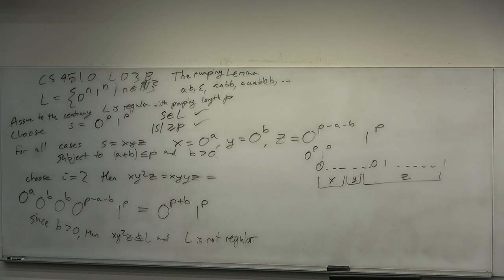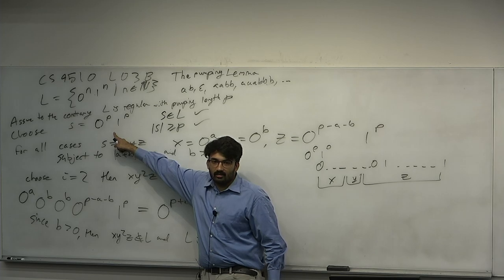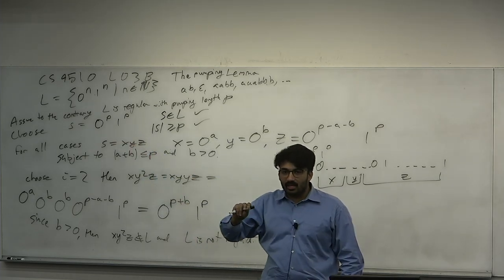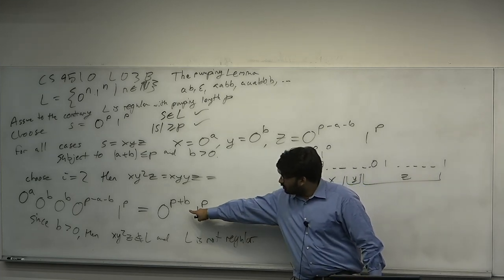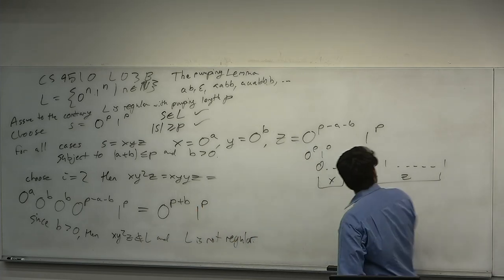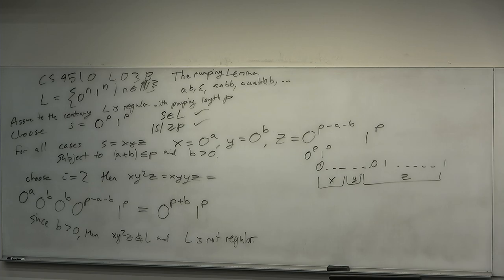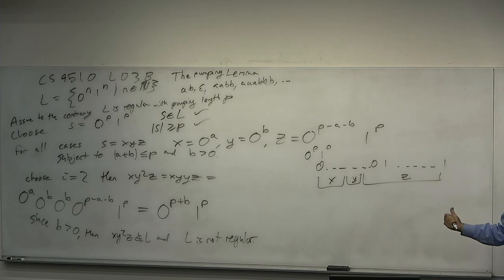The pumping lemma is a proof learned by example. The extra B we got is literally what we pumped up — we did the loop one more time, increasing the number of zeros without changing the number of ones. Because a regular language allows you to copy and paste a substring, you can pump up the string, but pumping a long enough string destroys the structure.